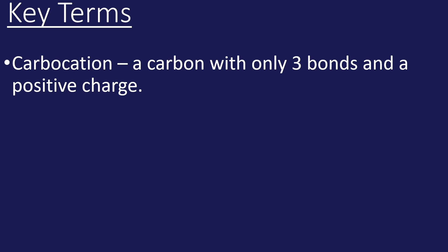Key terms: a carbocation is a carbon that only has three bonds and a positive charge. Usually carbon has four bonds, so it's an intermediate. It only exists partway through your mechanism, it's not actually very stable at all.